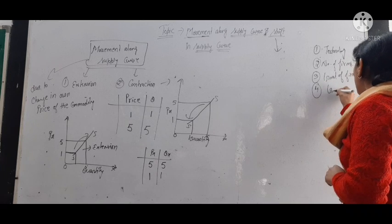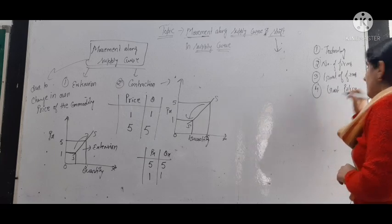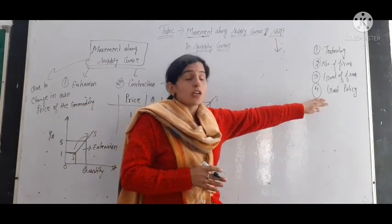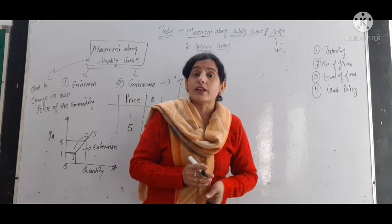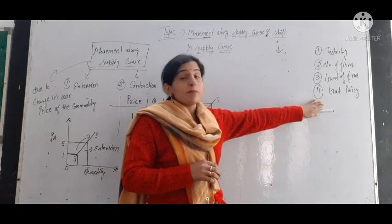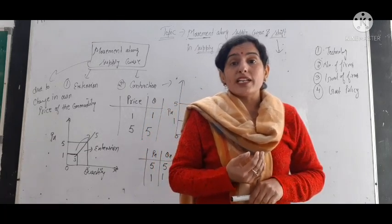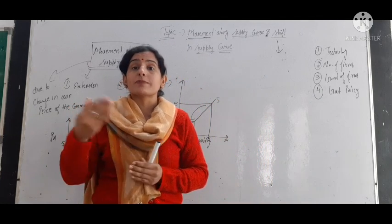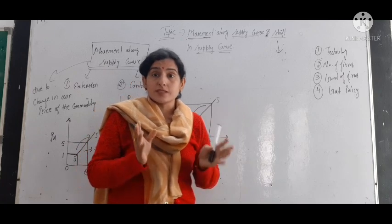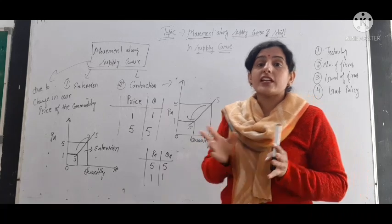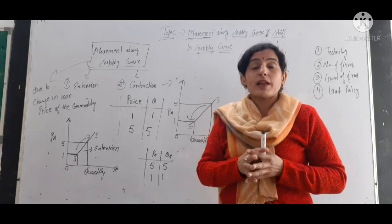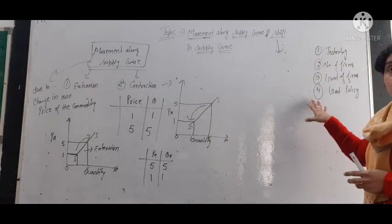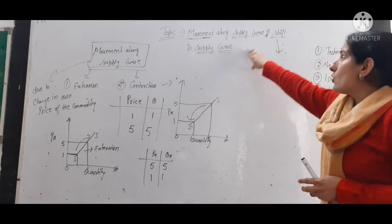Then we have government policy. If government policy changes, it affects supply. The government may impose taxes on the producer or give subsidies. When the government imposes more taxes, the prices of the commodity increase. If the government gives subsidies to the producer, then at the same price the producer will supply more quantity. Government policy affects the supply of the commodity. Inflation and deflation situations also affect the supply of the commodity in the market. Due to these other factors, the change in supply is called a shift in supply.